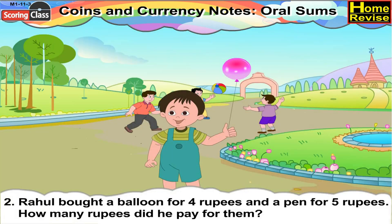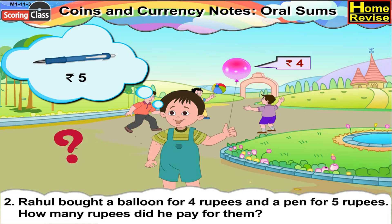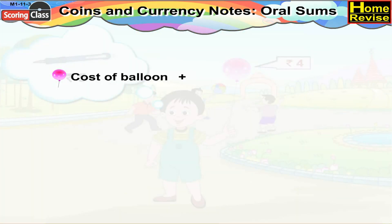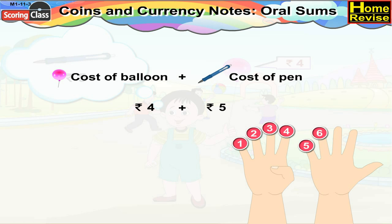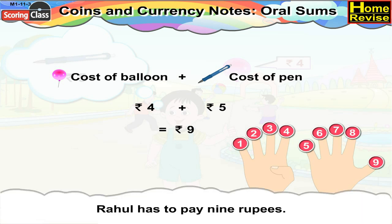Number 2: Rahul bought a balloon for 4 Rupees and a pen for 5 Rupees. How many Rupees did he pay for them? The cost of the balloon is 4 Rupees and the cost of the pen is 5 Rupees. The total Rupees Rahul has to pay would be cost of balloon plus cost of pen — that is 4 Rupees plus 5 Rupees, which equals 9 Rupees. So Rahul has to pay 9 Rupees.